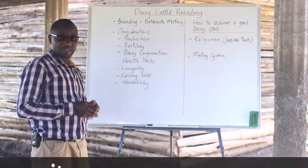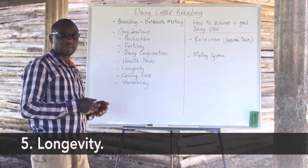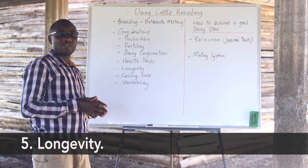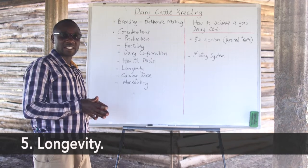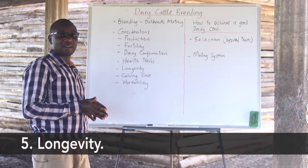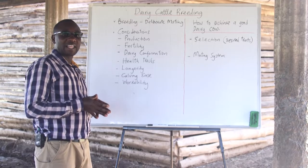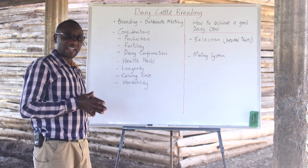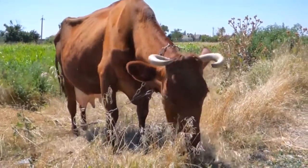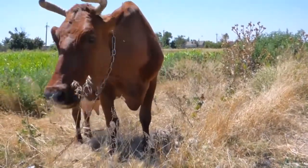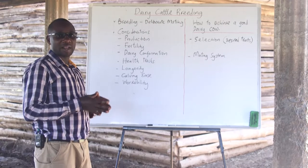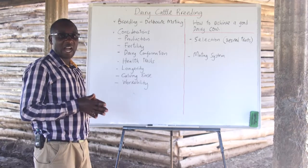We are also looking at longevity — the ability of a cow to remain on the farm for the longest time while being productive. Most dairy cows would be expected to give at least 8 to 12 lactations on the farm while remaining productive and profitable to the farmer. Longevity is therefore an aspect that a breeder will consider while selecting or determining how to breed the animals.